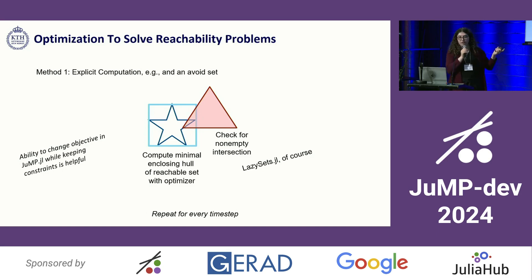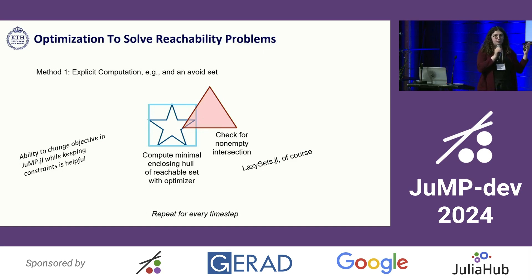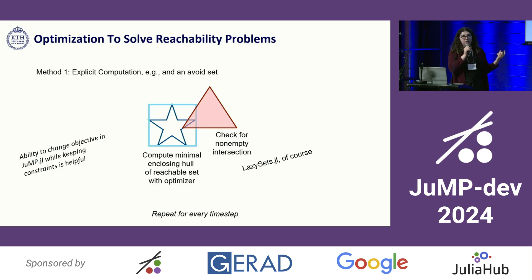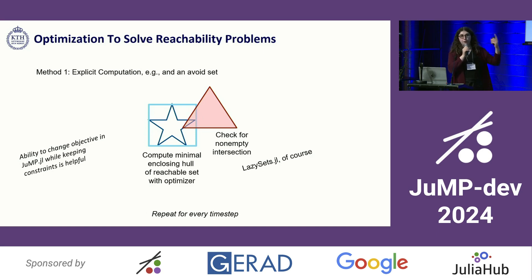A particular note here: the ability to change the objective in Jump while keeping the constraints the same is super useful because, as I mentioned, when we're computing hulls of the reachable set, we may not be able to do it in a single call to optimize. We may have to, for example in the hyper-rectangular case I demonstrated, do it in 2N calls where N is our state dimension.